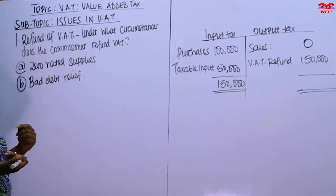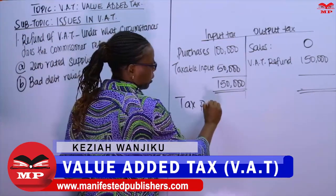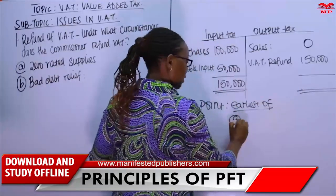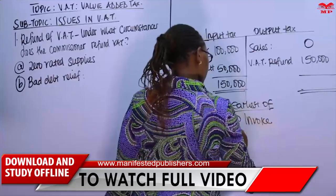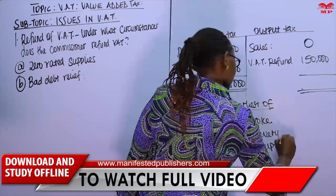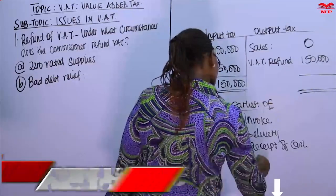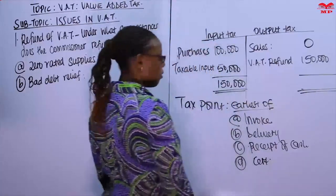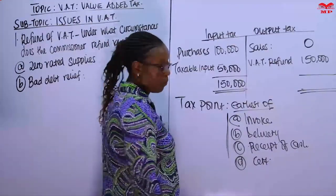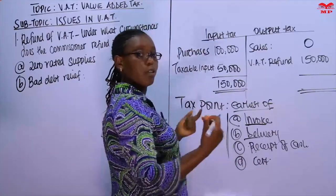This arises because the tax point — the point at which tax becomes due and payable — is the earliest of: one, the date of the invoice; two, the date of delivery; three, the date when you receive cash, whether in full or partial payment; and four, in case of constructions, when you receive a certificate from an architect. When you are selling on credit, invoice and delivery precede the receipt of cash, because you receive cash much later.